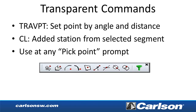There are a couple of new transparent commands. TRAVPT creates a point at an angle and distance. For the CL command, you can now do the station relative to the currently selected segment. These transparent commands are best accessed through the toolbar shown here, or you can type names like TRAVPT — they work at any prompt that asks you to pick a point.